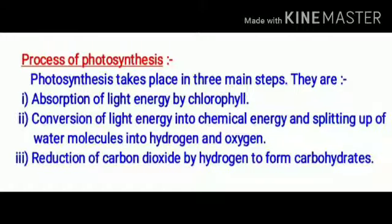Photosynthesis takes place in three main steps. Step 1: Absorption of light energy by chlorophyll. Step 2 has again two parts. Part 1 is conversion of light energy into chemical energy, and the second part is utilization of this energy to split water molecule into hydrogen and oxygen gas. Step 3: Reduction of carbon dioxide by hydrogen to form carbohydrate.